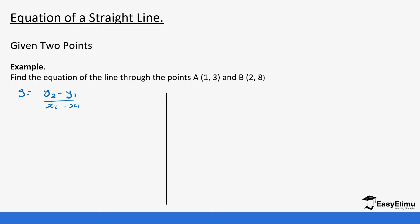Since A is given first, we take it as our first point. So x1, y1 belong to A, and x2, y2 belong to B. To get the gradient: it is 8 (which is y2) minus 3 (which is y1), over 2 (which is x2) minus 1 (which is x1). So 8 minus 3 gives us 5, and 2 minus 1 gives us 1, so the gradient equals 5.